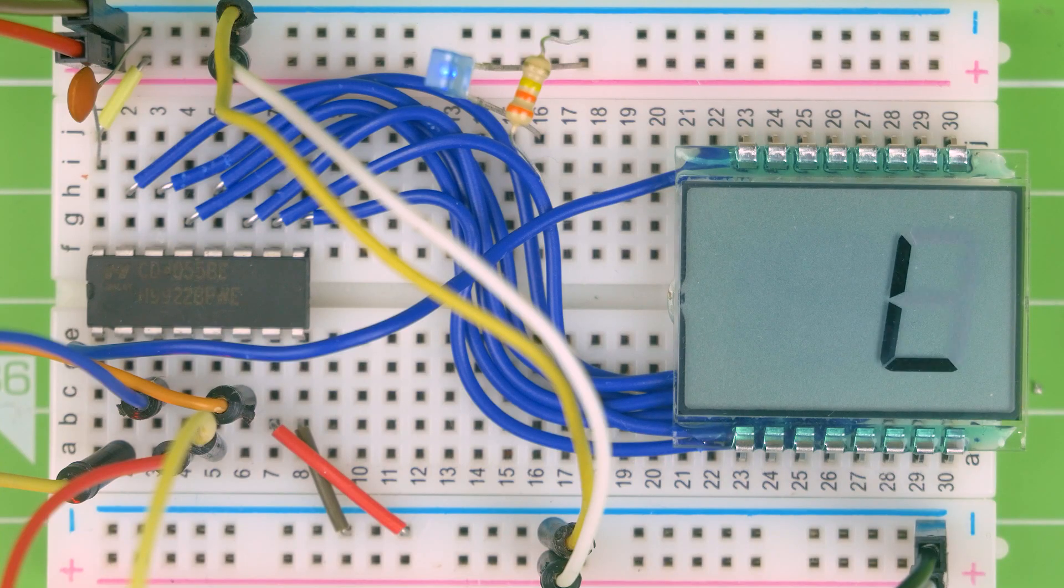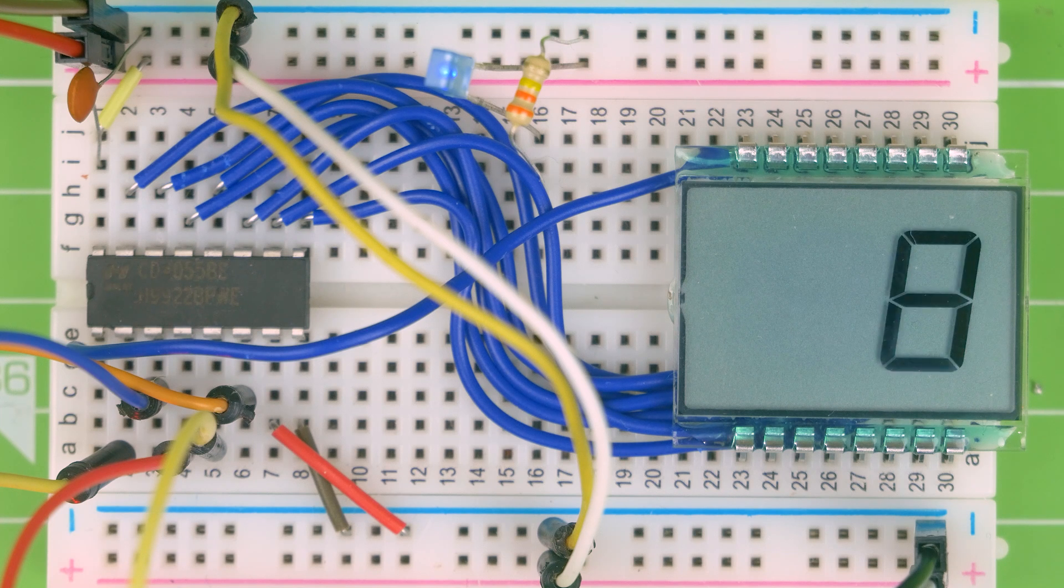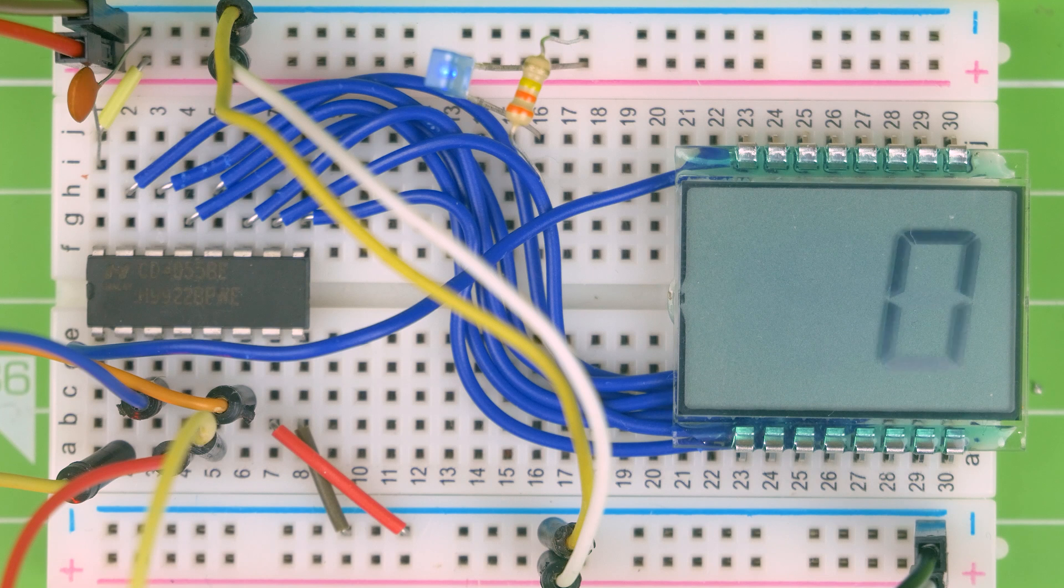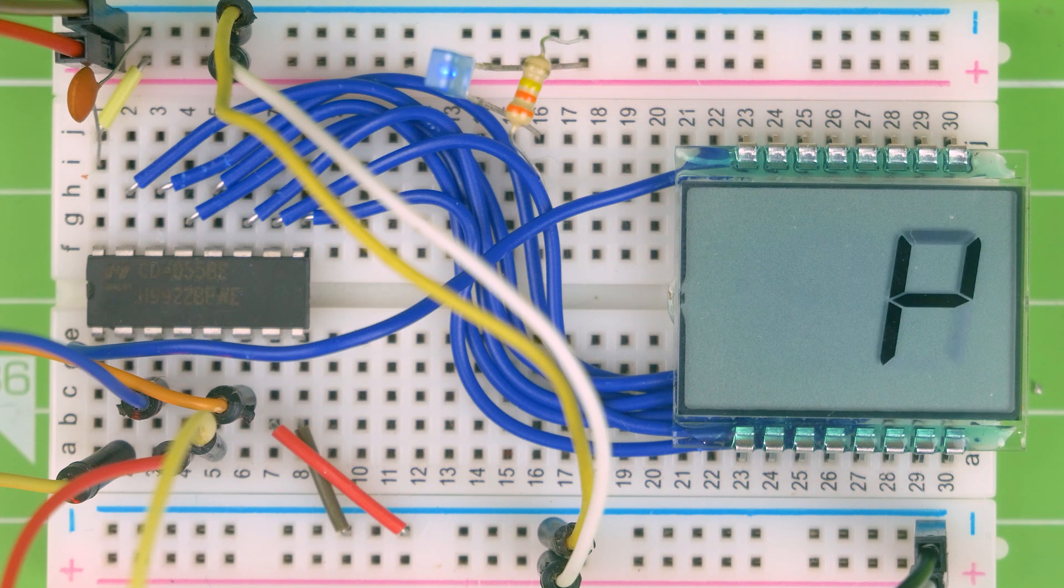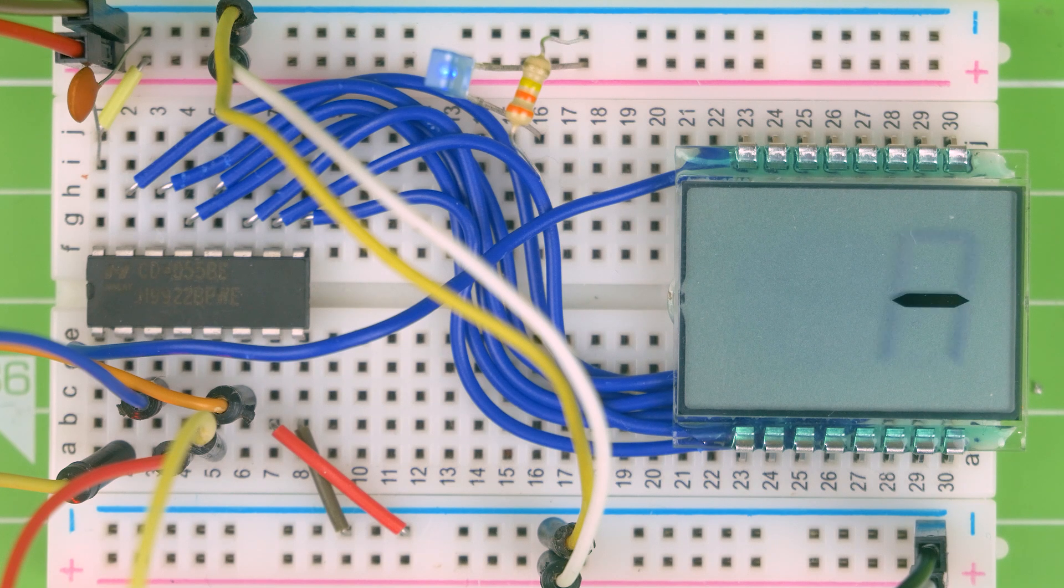So that is the CD4055. A very easy way to get a single digit LCD running on a project of yours. It's a pretty low current as well. You would need a couple to drive this display. In fact, I think this is a 2.5 digit LCD. Alright, I'll see you all next time.